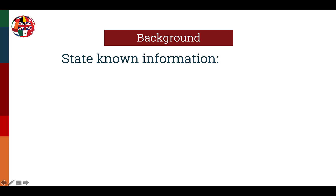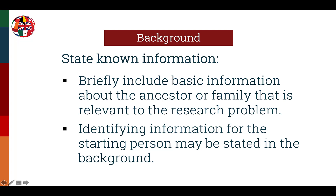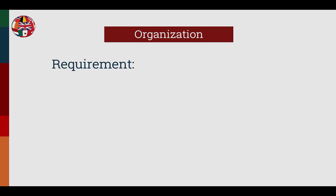The next element of the research report is the background section. Start by stating the basic information known before the research began, and briefly include basic information about the ancestor or family that's relevant to the research problem. Avoid going into unnecessary details — just stick to the basic facts about the project and the starting point information. The uniquely identifying information for the starting person may be stated in the background if it has not already been stated in the objective.